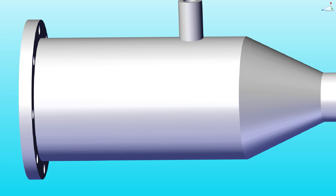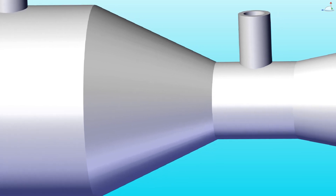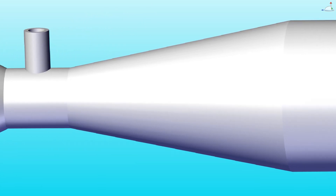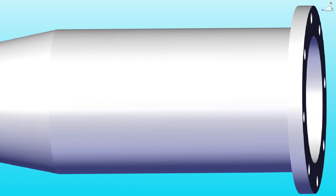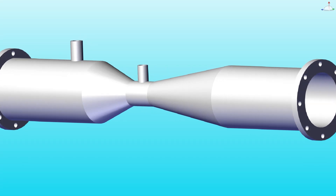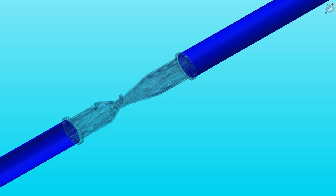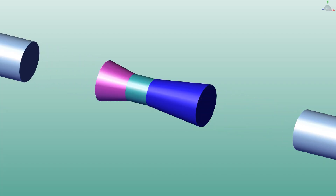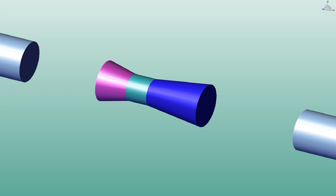This Venturimeter is connected to one inlet pipe through which fluid is flowing. There is a cone-type converging section, and after that there is a narrow passage, and after the narrow passage there is a diverging part, and after the diverging part there is one outlet pipe. So the Venturimeter is connected with two pipes: one is the inlet pipe and the other is the outlet pipe. This is the inlet pipe, this is the outlet pipe, and this one is the Venturimeter.